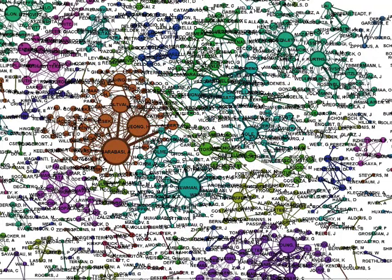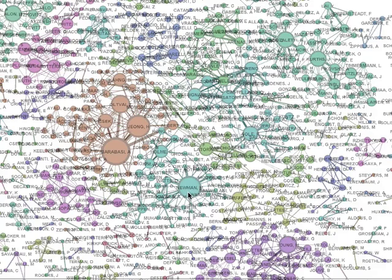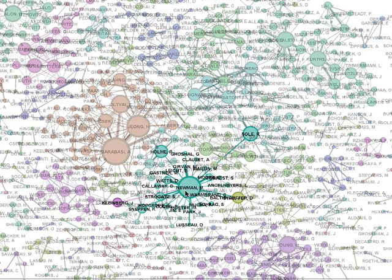Graphs can also be used to model social relationships between people. This, for example, is a network of co-authorship relations among people who study graphs. For example, here's Newman, the author of the textbook that we're drawing some chapters out of.